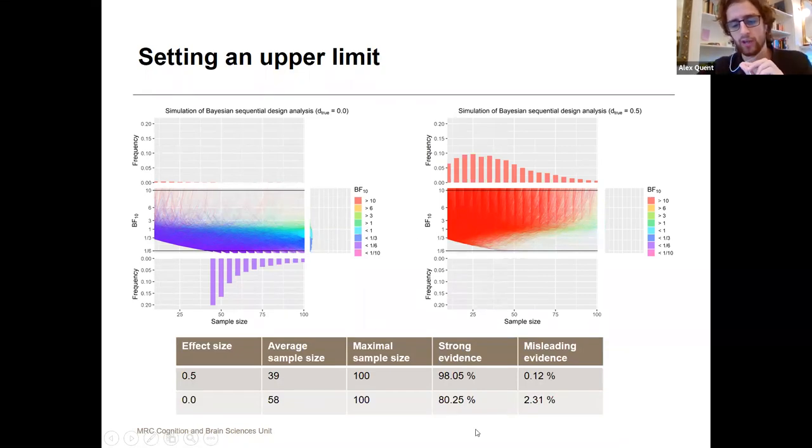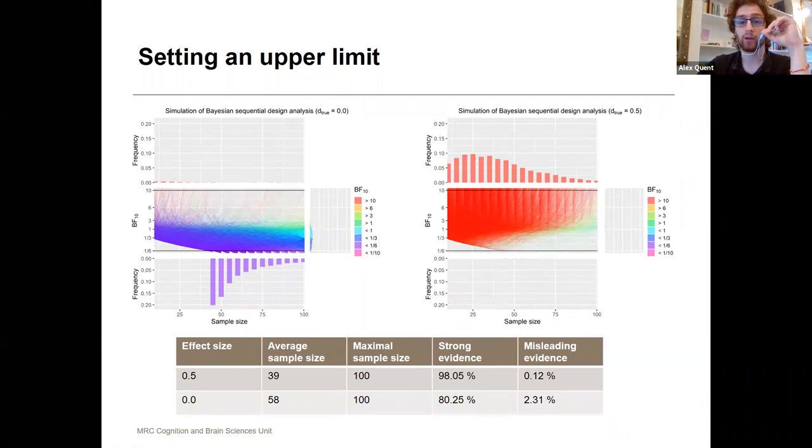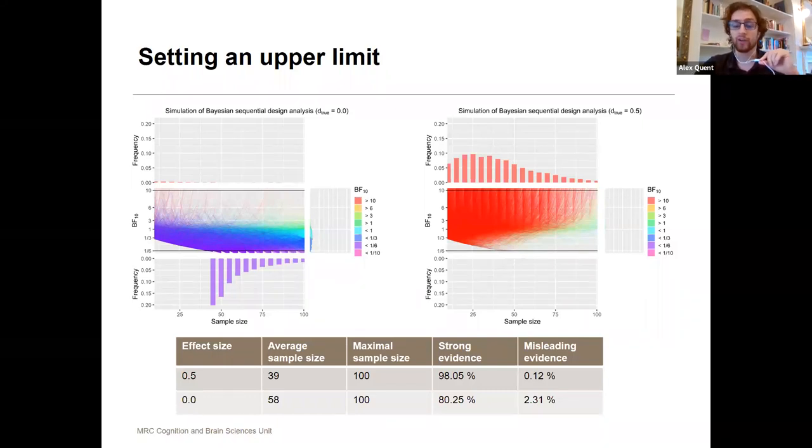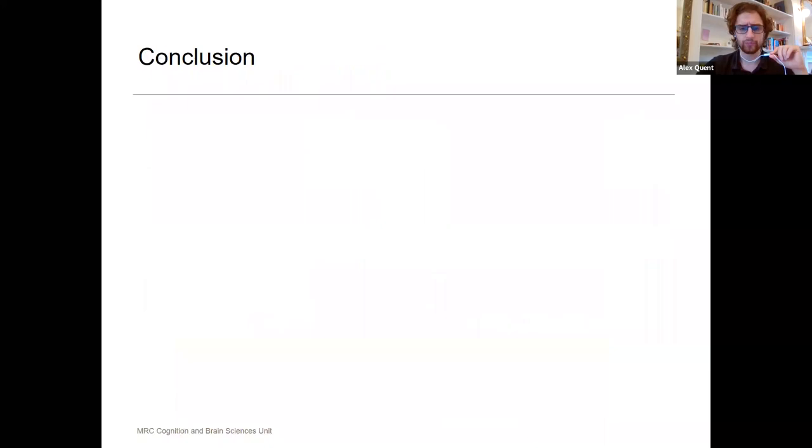If you analyze the distribution, you see that with the null effect you still get strong evidence in 80% of the cases but with an average sample size of only 58, much less than 200 that we got with a fixed-n design. So sometimes we can actually get away with collecting much less data than we actually need while providing the same level of evidence.